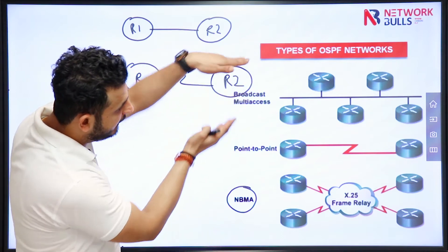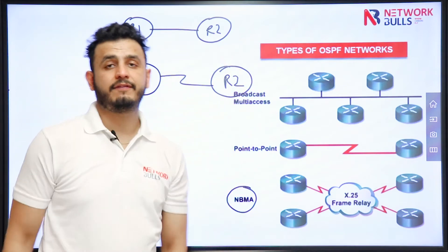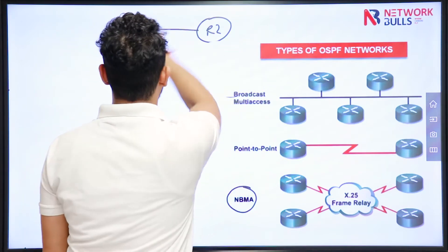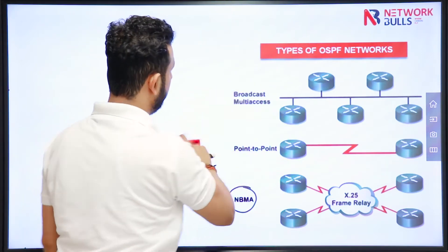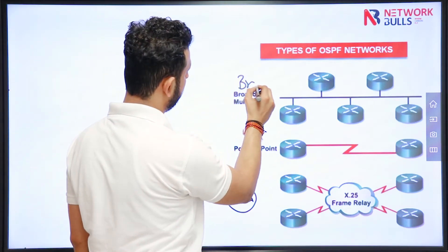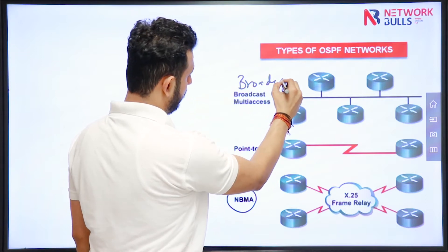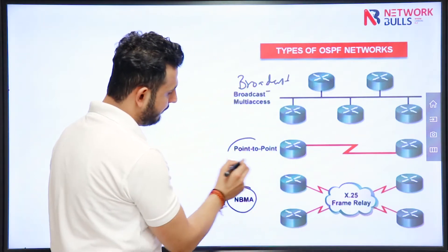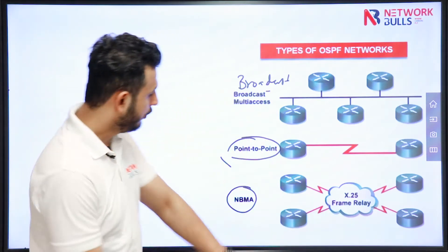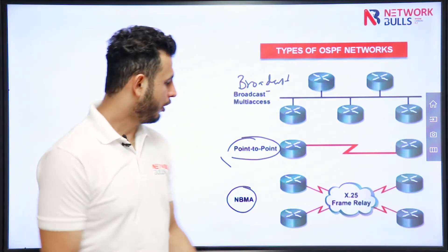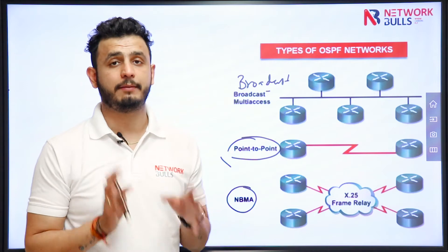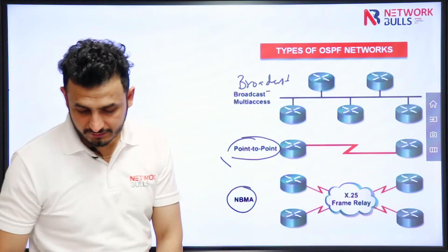OSPF defines different network types for these different types of interface encapsulation. For broadcast networks, the OSPF network type is broadcast. For serial links, the OSPF network type is point-to-point, and for Frame Relay and X.25, the OSPF network type is non-broadcast. In non-broadcast network type, we also have a static neighbor concept, but in the broadcast and point-to-point cases, neighborship is dynamic.